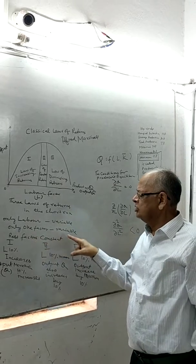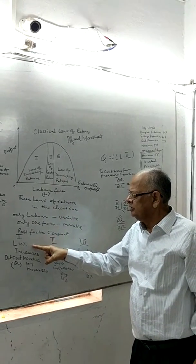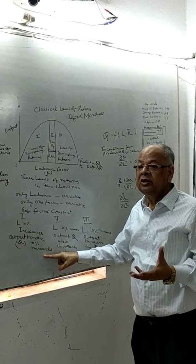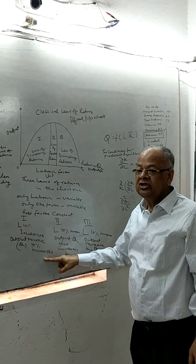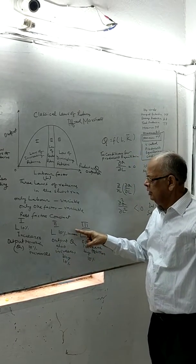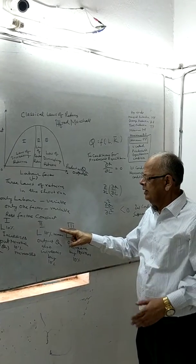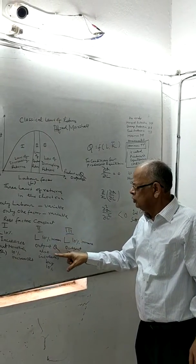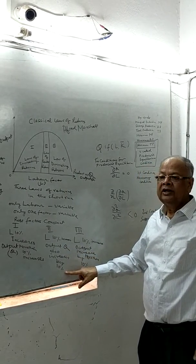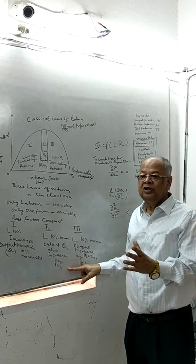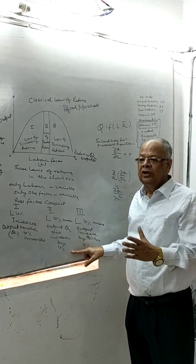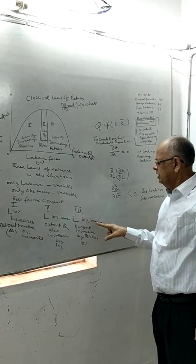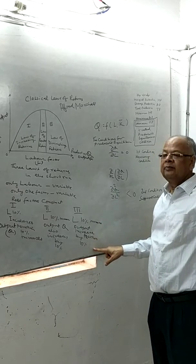Only one factor — labour — is variable; the rest are constant. In the first stage, labour increases by 10% and output increases by more than 10% because economies are greater than diseconomies in the earlier stage of production. In the second stage, when production has reached some stage of maturity, labour increases by 10% and output also increases by exactly 10%, meaning economies and diseconomies are exactly balanced.